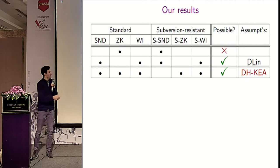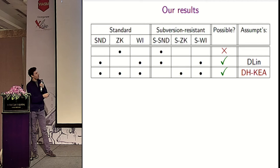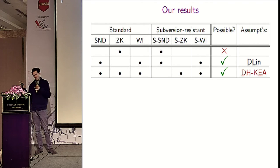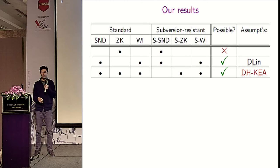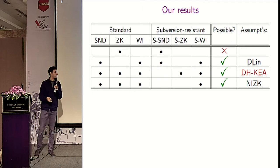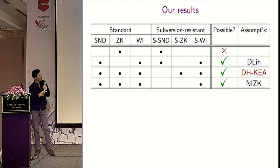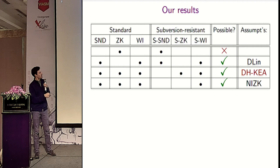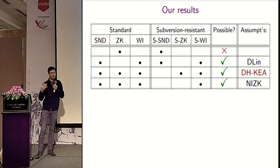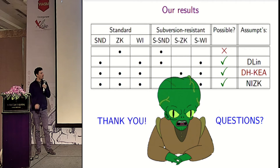This leads to our main result: we can achieve all possible notions except subversion soundness — which is incompatible with zero knowledge — under a strong assumption. This is expected since subversion zero knowledge implies two-move zero knowledge. For those not happy with strong assumptions, we also show that if one is content with a regular NIZK and additionally wants subversion witness indistinguishability, this can be achieved without any extra assumptions. That concludes the talk.